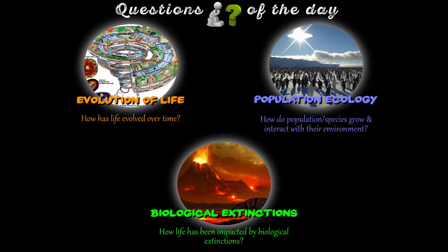Welcome back to Chapter 4 of the ESS2 course, this time on life and the biosphere. We looked at the evolution of life in the previous video. At this point we'll be looking at population ecology, which looks at how populations change over time and how populations and species interact with each other and with their environment. It's a very dense topic that would need more than just one chapter to really analyze.